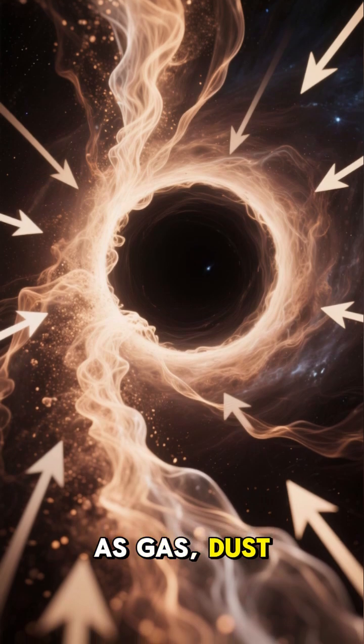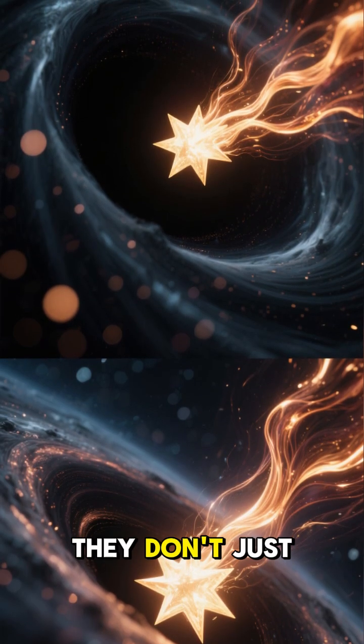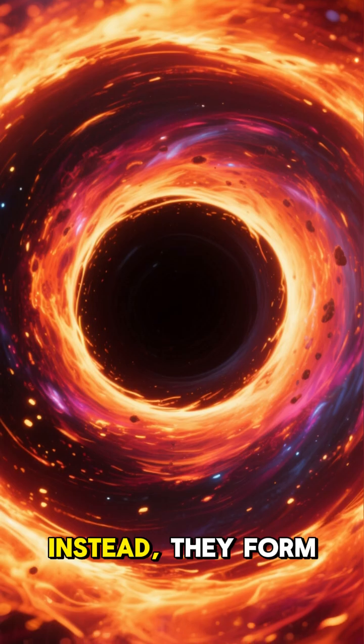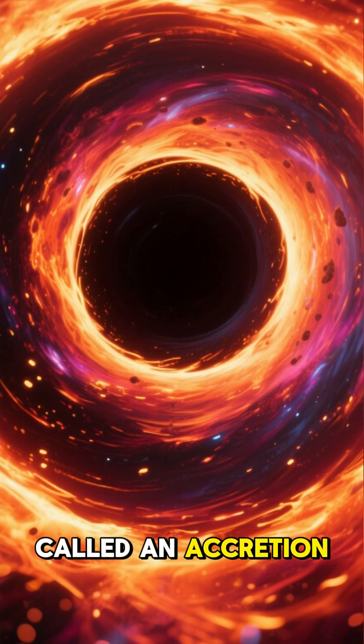As gas, dust, and even stars get pulled in by the black hole's immense gravity, they don't just fall straight in. Instead, they form a swirling, superheated disk called an accretion disk.